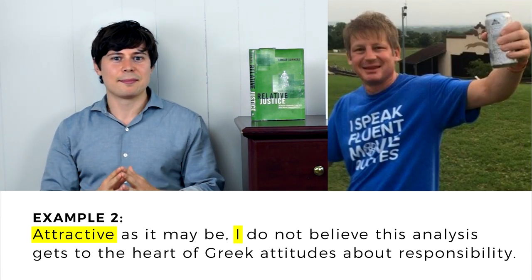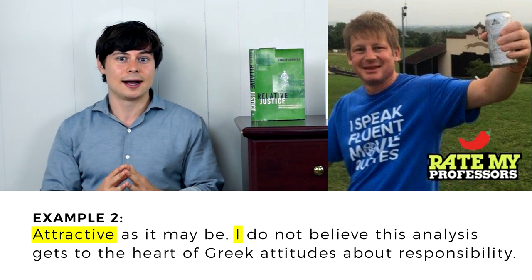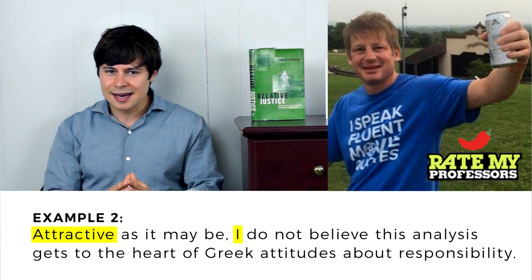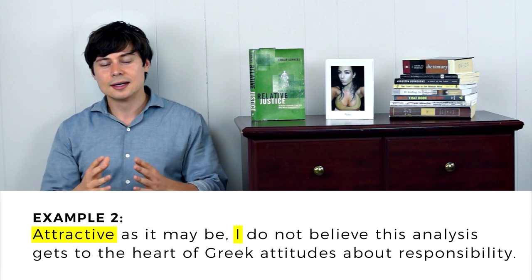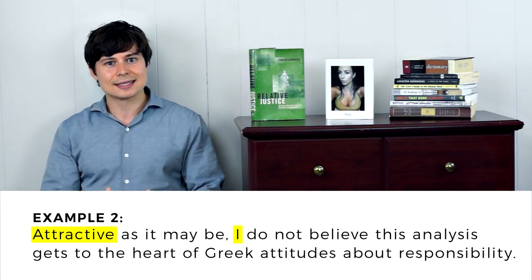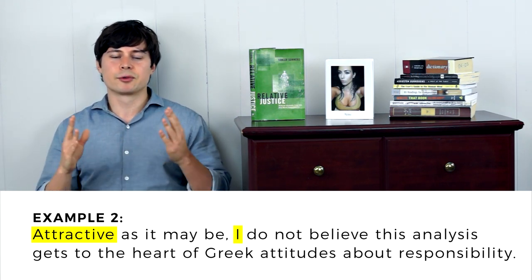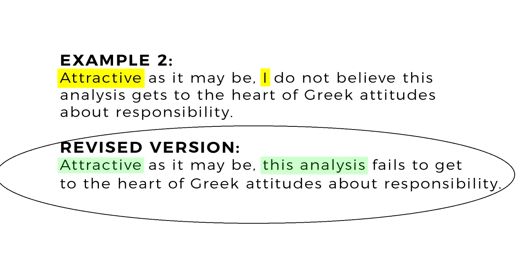While Tamler loves to remind family and friends that he received a chili pepper for hotness on RateMyProfessors.com, I don't think he means to describe himself as attractive in this particular sentence. How could he fix it? Well, he could stop hedging and remove the phrase 'I do not believe' from the sentence. Here's the revised version after we remove the embarrassing dangling modifier: 'Attractive as it may be, this analysis fails to get to the heart of Greek attitudes about responsibility.' Much better. Now the analysis, and not my brother, is being described as attractive.